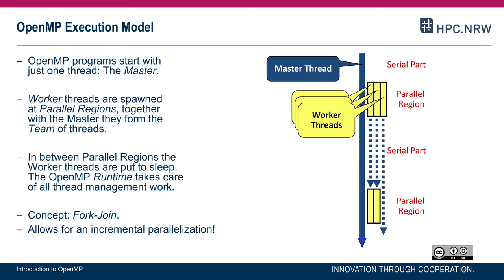All the work in your program can be shared among the threads in the team. A parallel region has a begin and an end, and at the end the program continues with only one thread being active. The other threads are not necessarily destroyed — in almost all cases they are just put to sleep. A good OpenMP runtime manages to wake threads up in time for the next parallel region, possibly with a different number of threads.